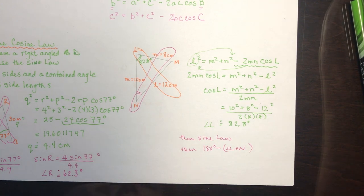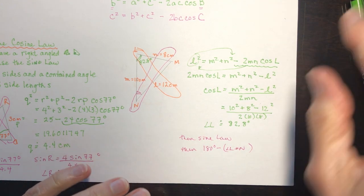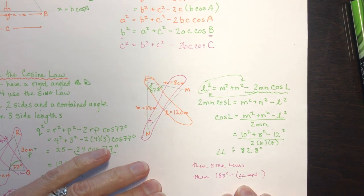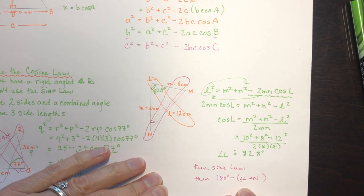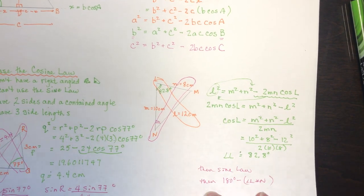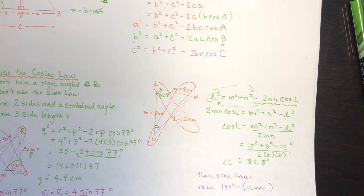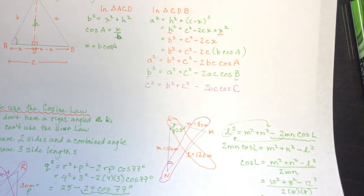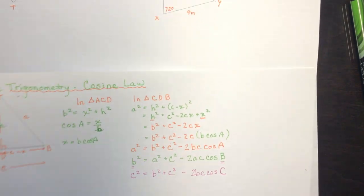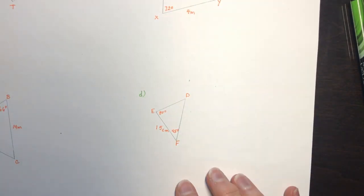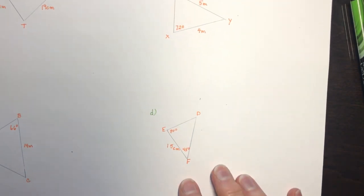I have four practice questions on the next page. For each one, you need to decide: should you use the sine law, the cosine law, or another approach to solve the triangle?